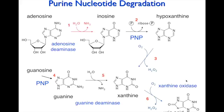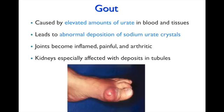There's a drug, allopurinol, which inhibits xanthine oxidase, and that is used to treat gout. One symptom is swelling in the big toe, which is very painful, caused by elevated amounts of urate that crystallize in the joints. The joints become inflamed, very painful, and arthritic. These crystals can also accumulate in the tubules.